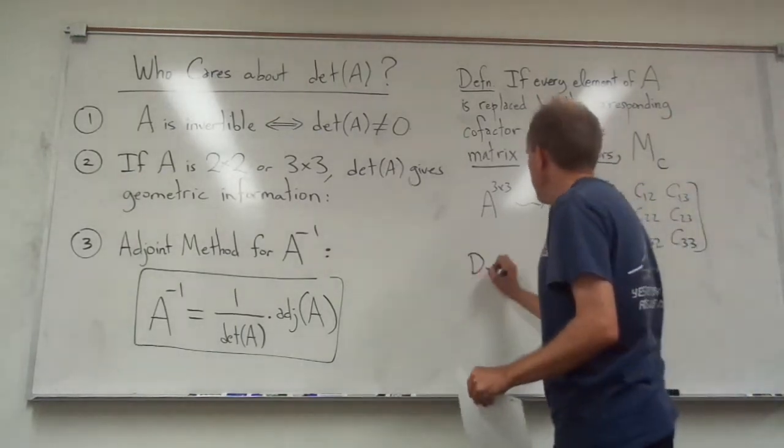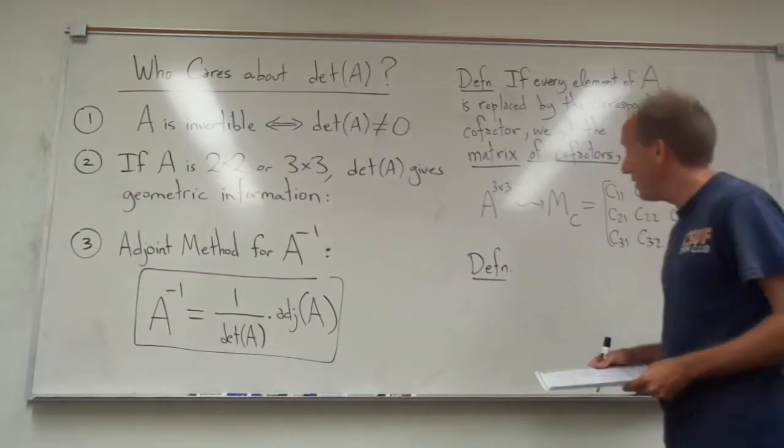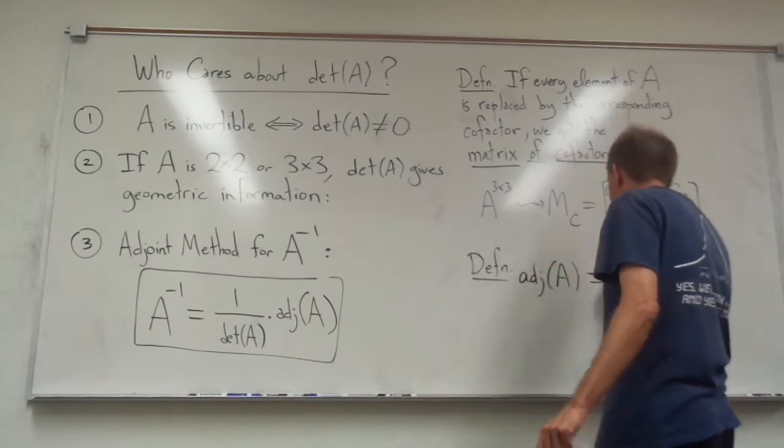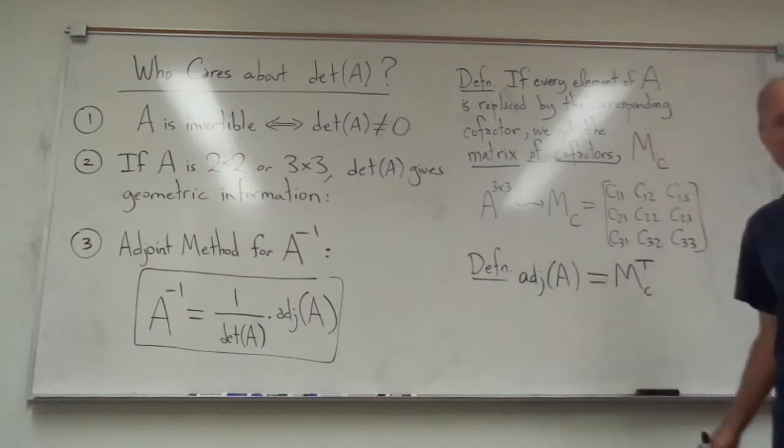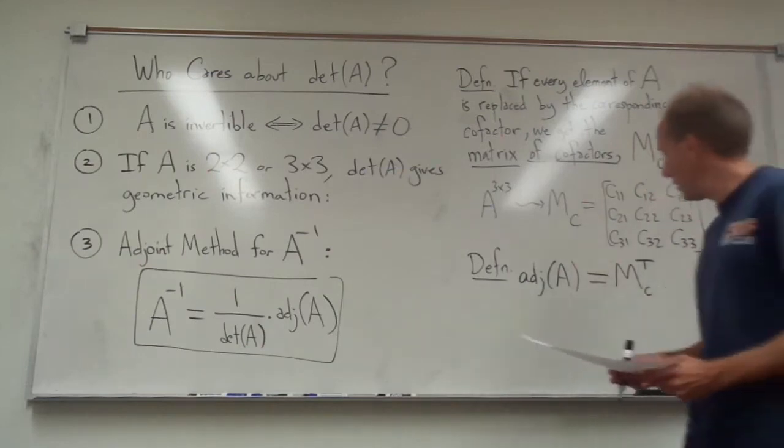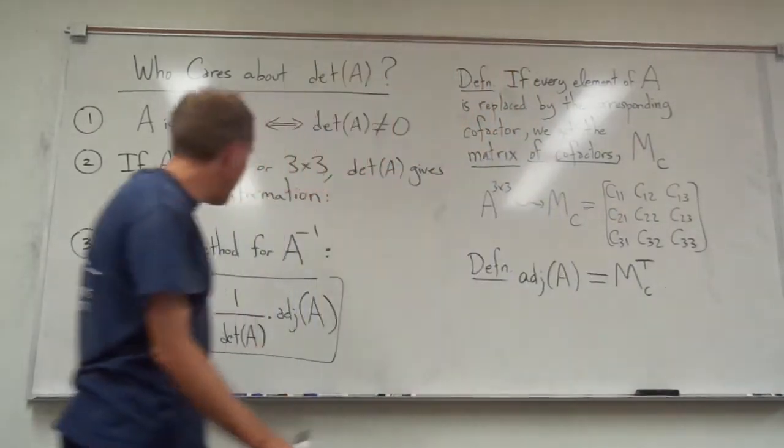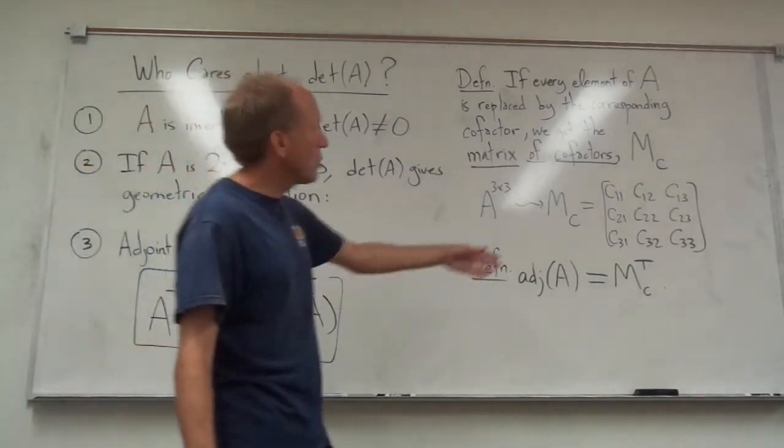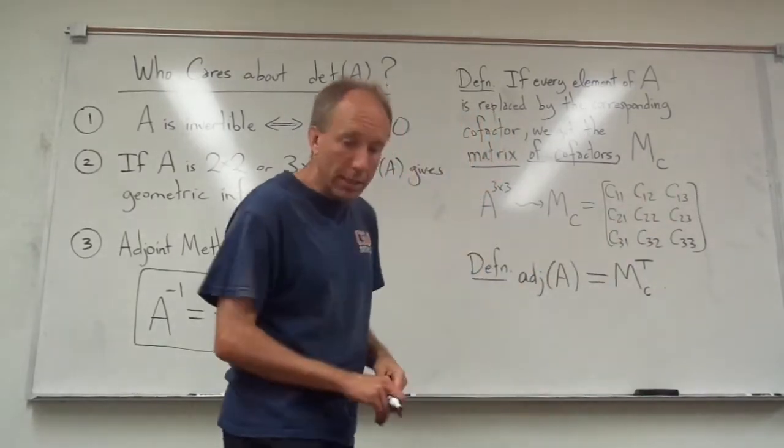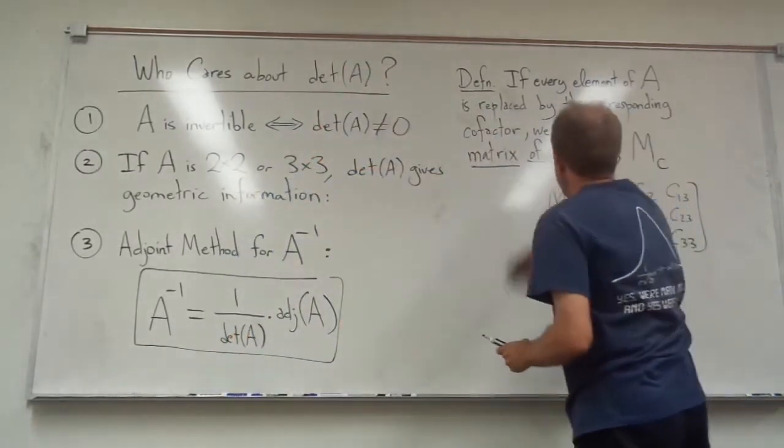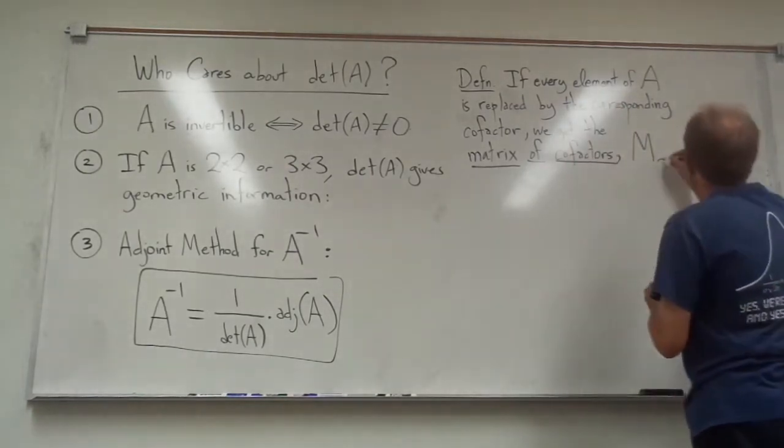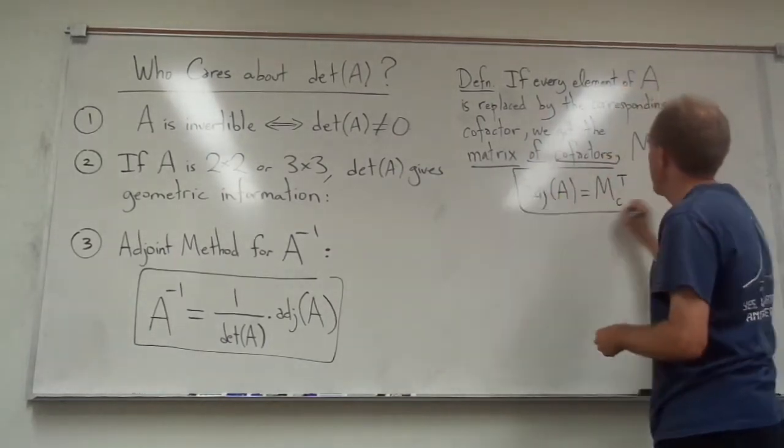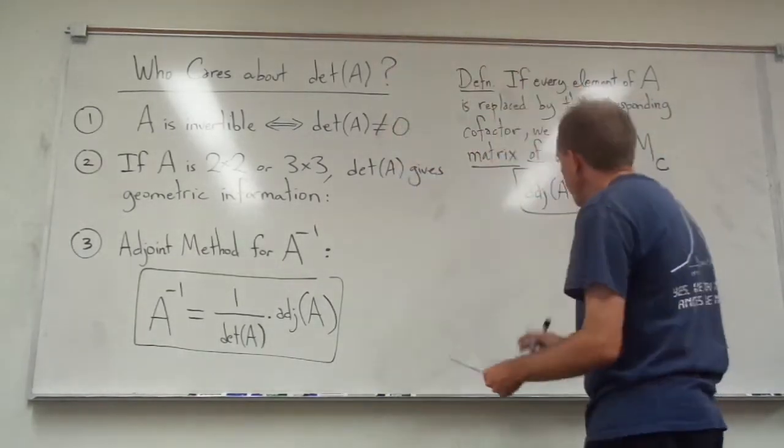From there, it's very easy to use this formula because the adjoint of A is just the transpose of this. The adjoint of the matrix A, by definition, is simply the transpose of the matrix of cofactors. That's kind of a nice thing that all you have to do to find A inverse is calculate the determinant to put it on the bottom here, and then the adjoint of the matrix is just the transpose of what I have right here. So let's try it on an example.